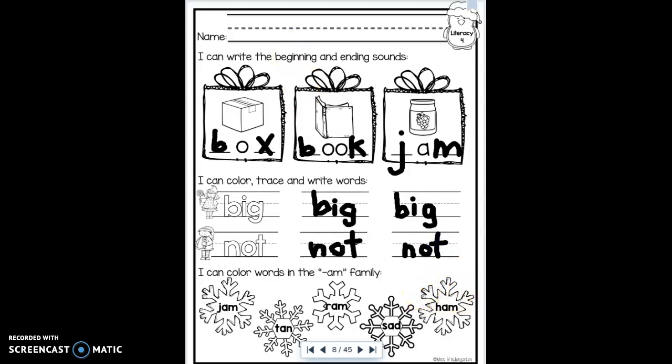At the bottom, I'm going to grab a crayon so I can do some coloring. I need to color the words in the am family. The words need to end in A-M. So this one, j-am. That needs to be colored. T-A-N, Tan. That's A-N. Very close, but I'm not going to color that. The next one is r-am. There's another am family. I need to color this snowflake. This one is S-A-D. Not in the am family. The last one is H-A-M. Am. Ham. That needs to be colored. So I need to color in jam, ram, and ham. Perfect.